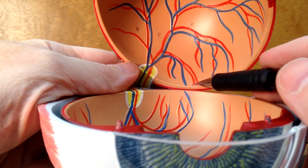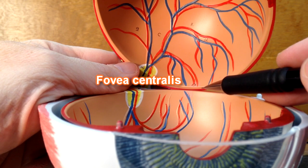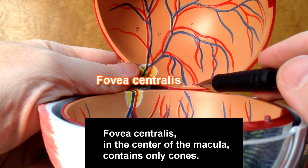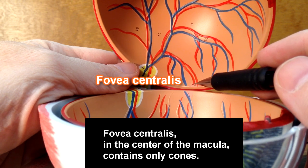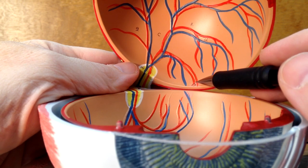In the center of the macula, we would have the fovea centralis. And the fovea centralis is made exclusively of cones. That's where light gets focused.